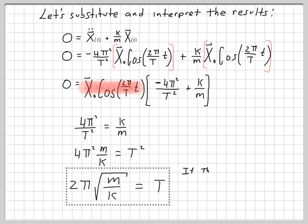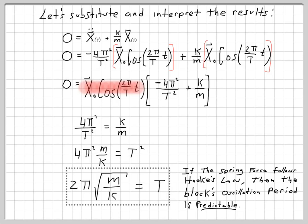And the good part about this is, if the spring force follows Hooke's Law, then the block's oscillation period is, indeed, predictable. So, our objective in the lab is going to be to set up an oscillating system with a linear spring and test to see if two pi times the square root of the mass of the block, divided by k, the spring constant, is, indeed, equal to the time period. We'll see what happens. All right.